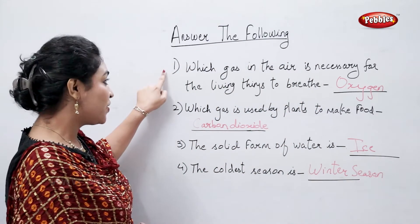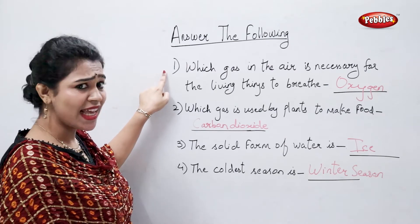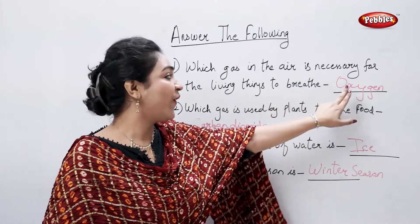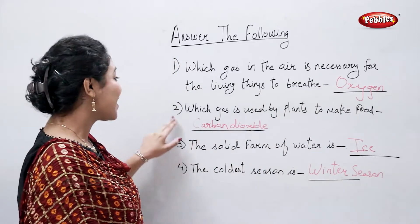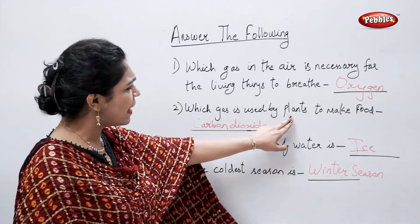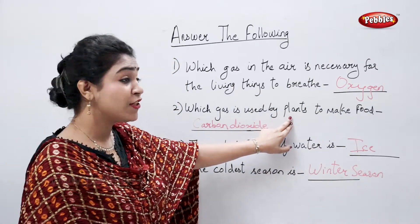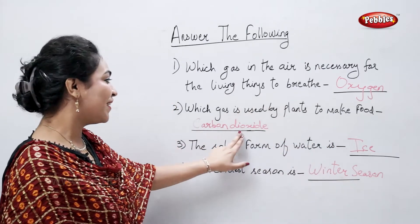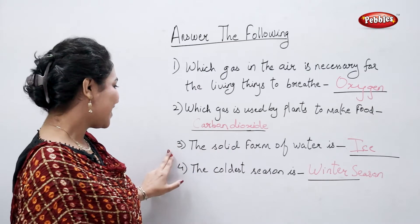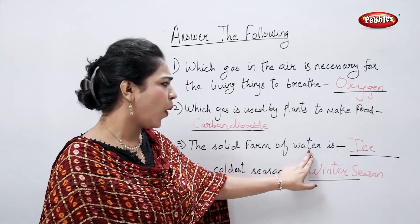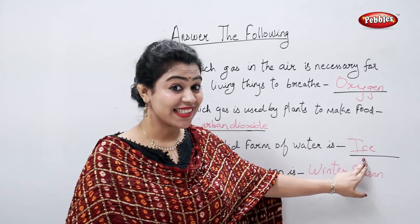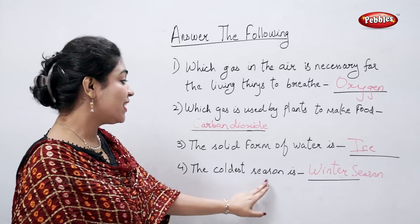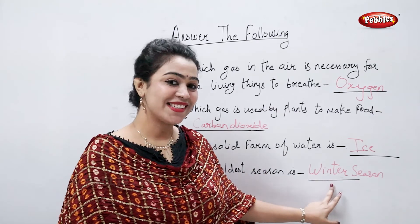Which gas in the air is necessary for living things to breathe? That's oxygen. Which gas is used by plants to make food? That's carbon dioxide. The solid form of water is ice. The coldest season is winter season.